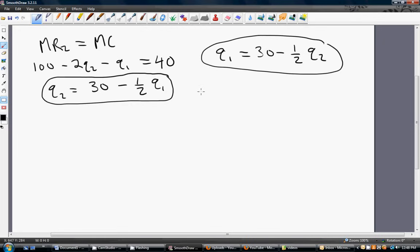And we've got two reaction functions. What we want to do is to substitute one of these reaction functions into the other. So what I'll do is I'll take the reaction function for firm 1. And I'll substitute into it the reaction function of firm 2. And now we're going to simplify this.